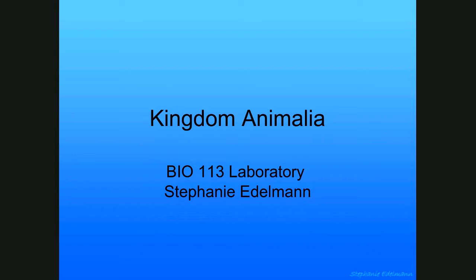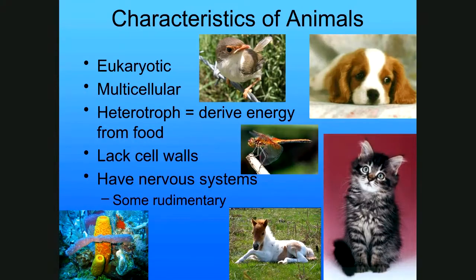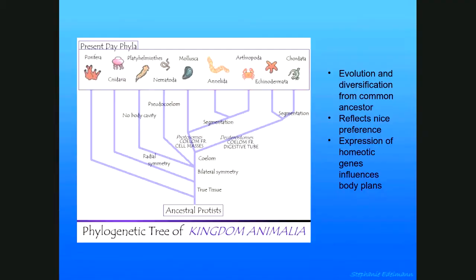Kingdom Animalia — we talked about this last time already. We went over the characteristics of animals: that they're multicellular, heterotrophic, lack cell walls, because plants have cell walls but animals don't. Then we talked a little bit about the phylogenetic tree.